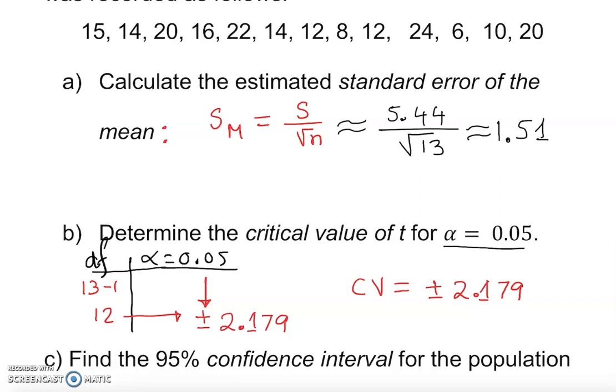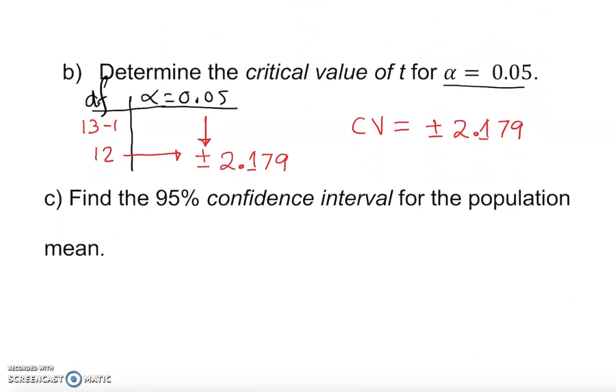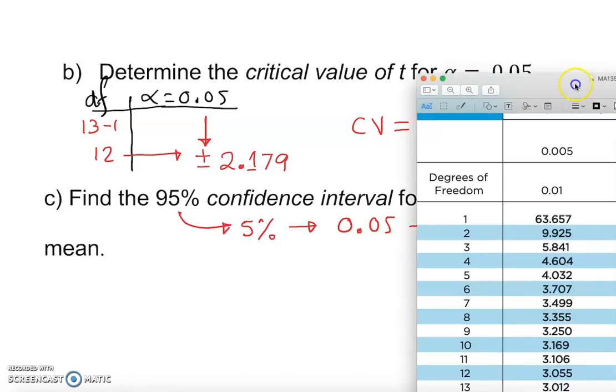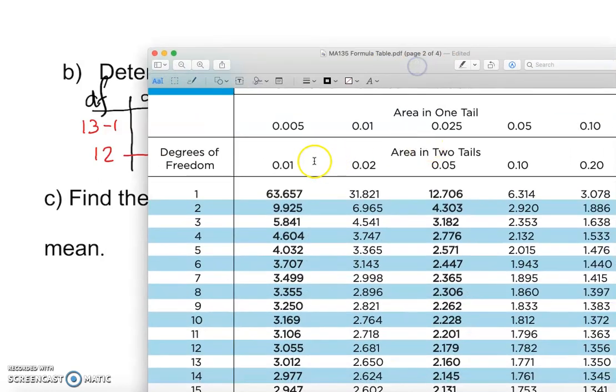What else is the question asking? The question is asking find 95% confidence interval for the population mean. Remember, 95 remaining is 5%, so the 5% as a decimal is going to be 0.05. That would be our alpha.